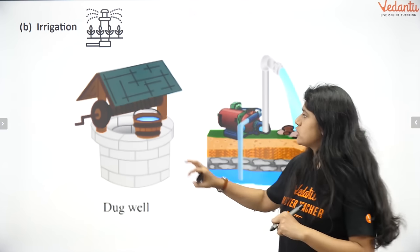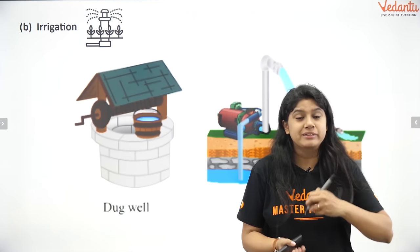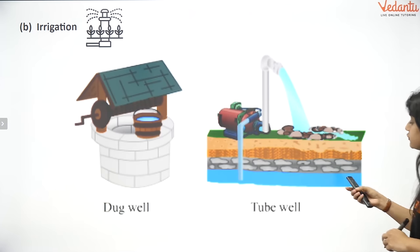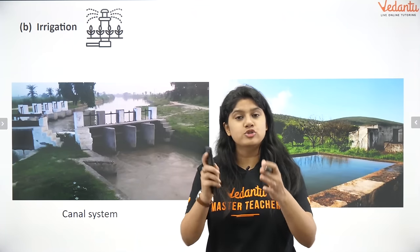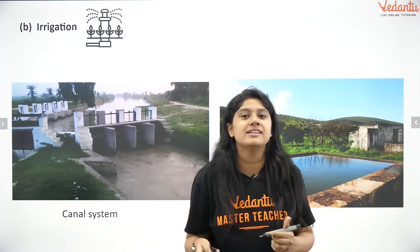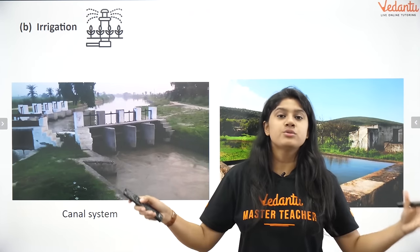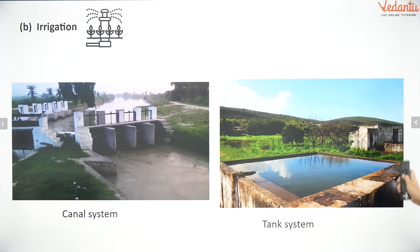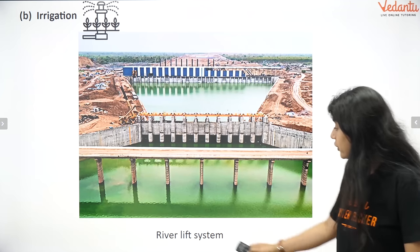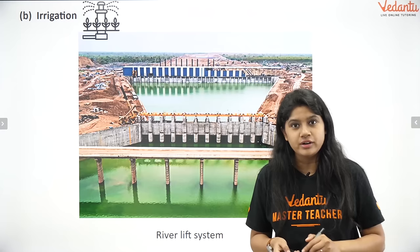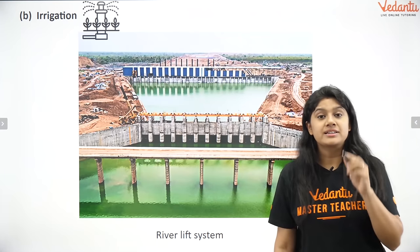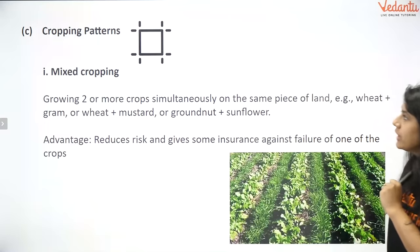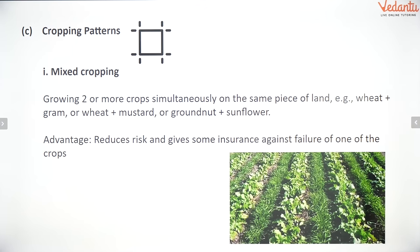Next is irrigation — the water supply to plants. Different techniques include: wells, tube wells (still used in many parts of India), canal systems where a big river is divided into small canals reaching various places, tank systems where water is stored for future use, and the river lift system where water is lifted directly from the river and transported to nearby areas.